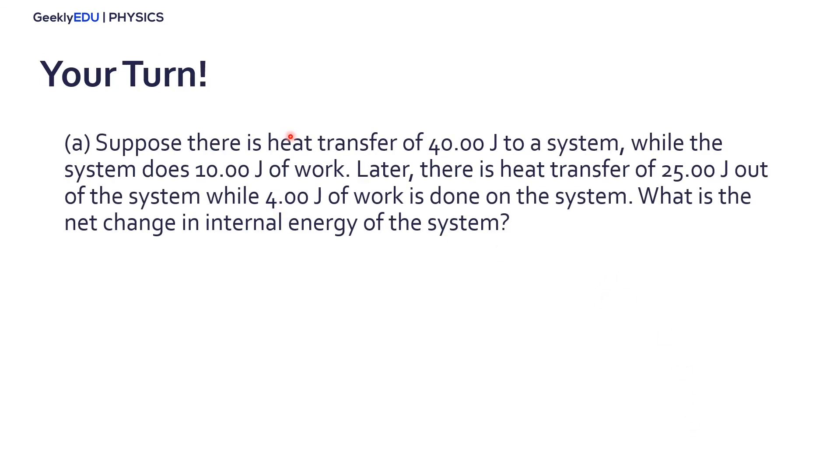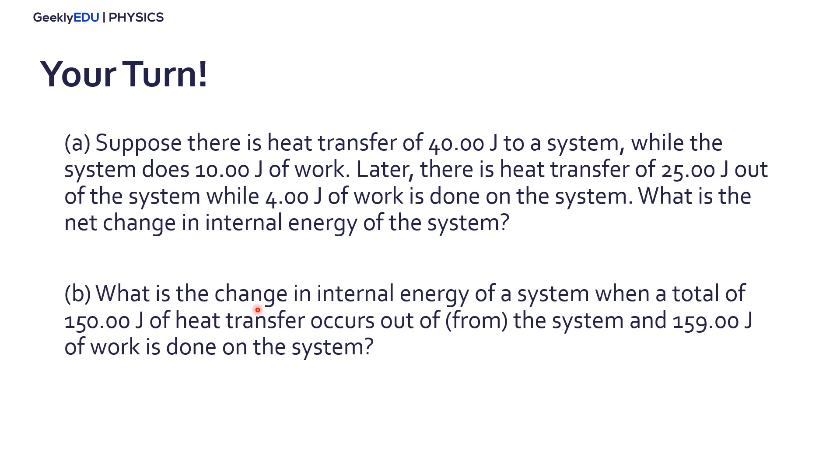Now it's your turn. So think about these two situations here. Situation A, suppose there is a heat transfer of 40 joules to a system, while the system does 10 joules of work. Later, there is a heat transfer of 25 joules out of the system, while 4 joules of work is done on the system. So what is the net change in internal energy of the system? And compare this scenario here A with letter B. So what is the change in internal energy of a system when a total of 150 joules of heat transfer occurs out from the system and 159 joules of work is done on the system? Do your calculations apply in the first law of thermodynamics in both situations and see if there is any similarities. Write your answers in the comment sections and see you later.